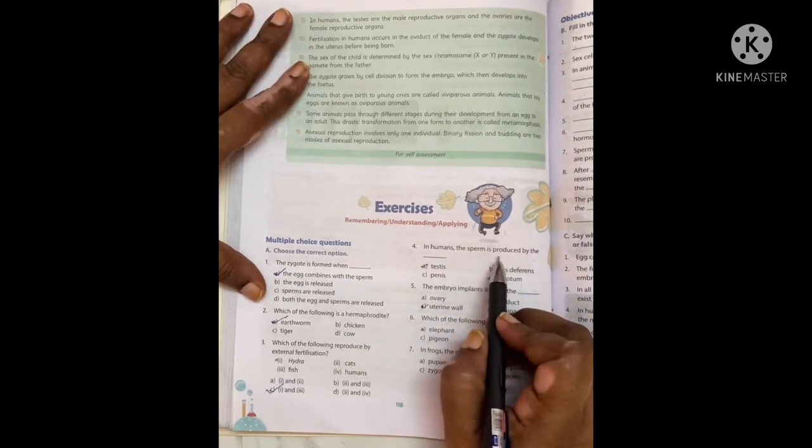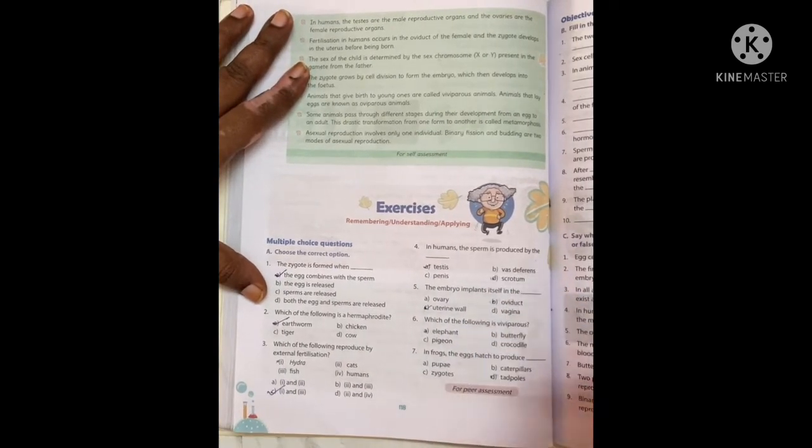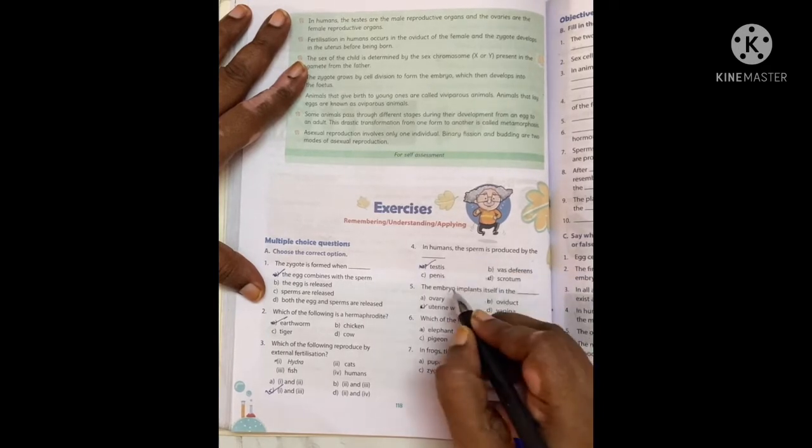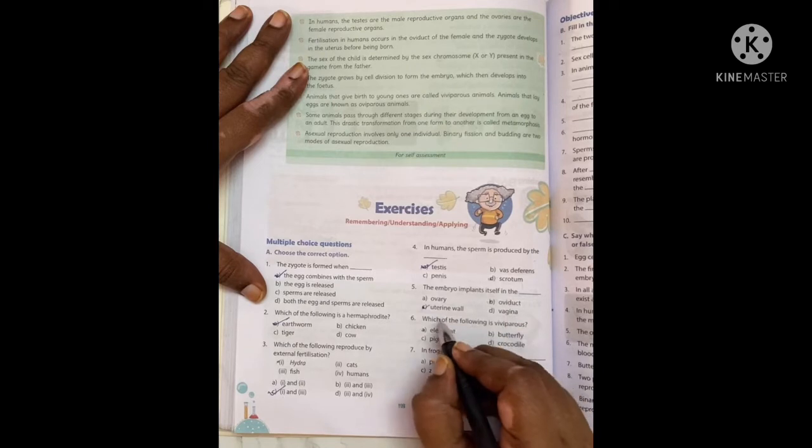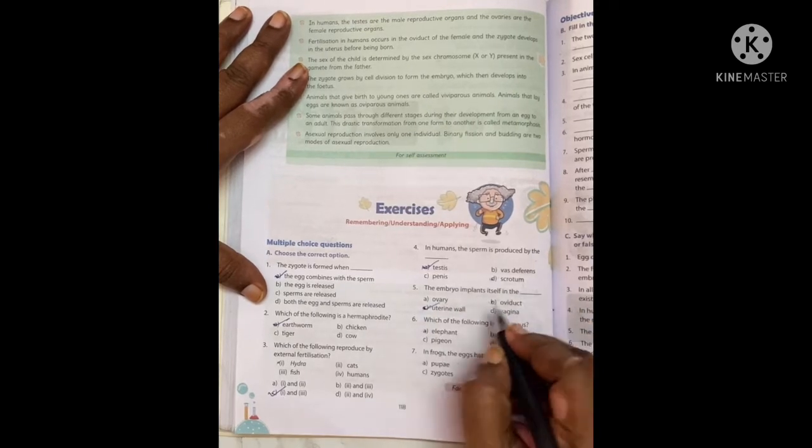In humans, the sperm is produced by the testes. Answer A. The embryo implants itself in the uterine wall. Answer C.